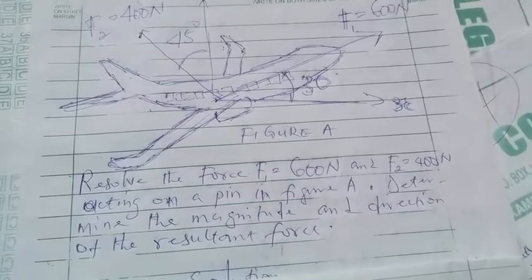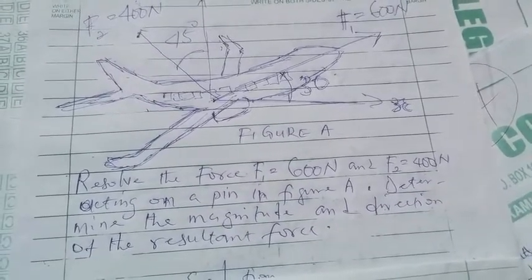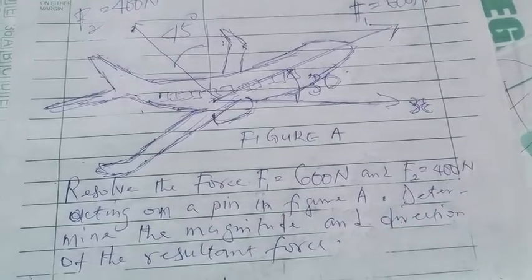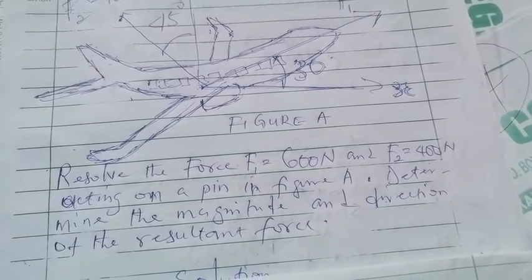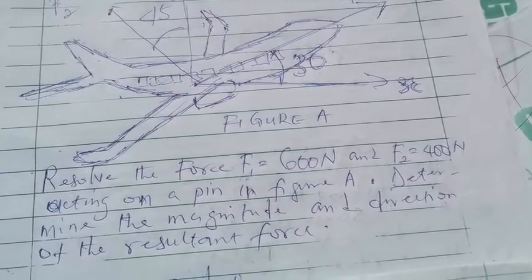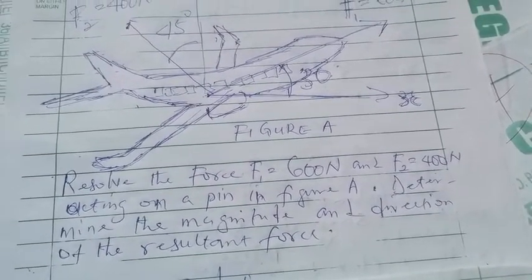Hi and welcome to NGNAS Mindset with another amazing question on two dimension. Question C is resolve the force F1 600 Newton and F2 400 Newton acting on a pin in figure A. Determine the magnitude and direction of the resultant force.